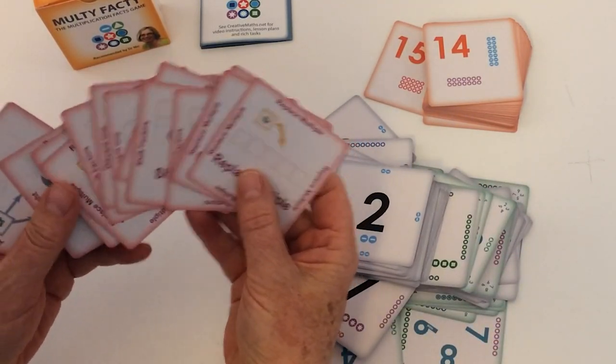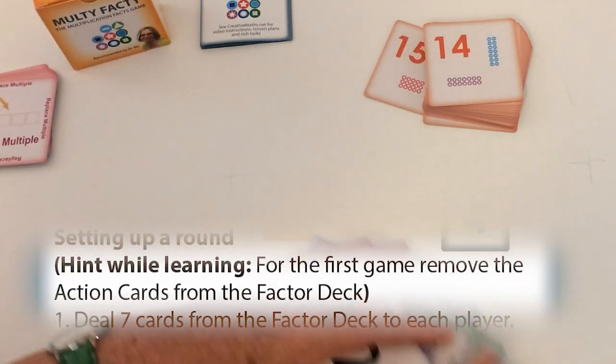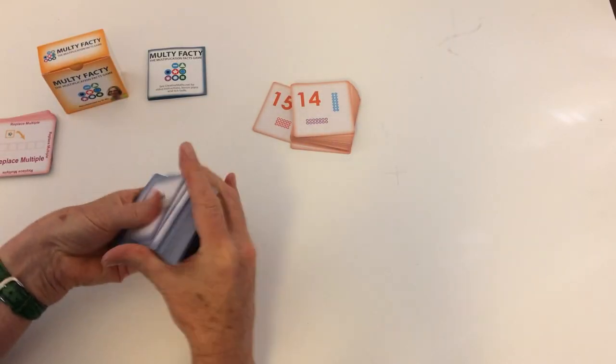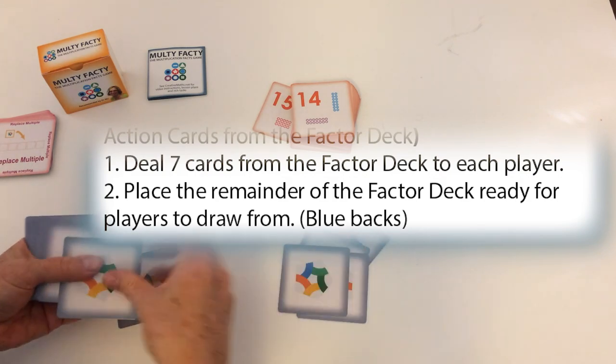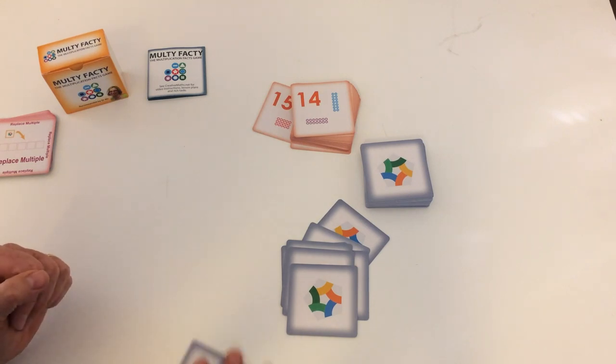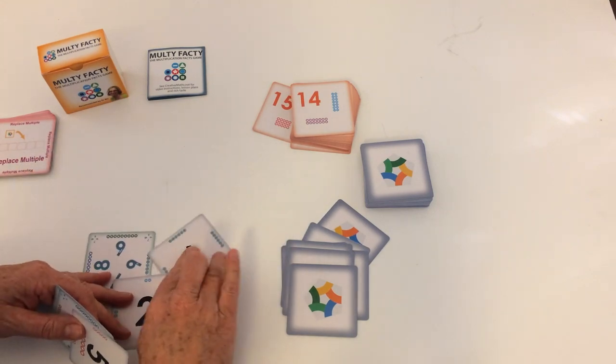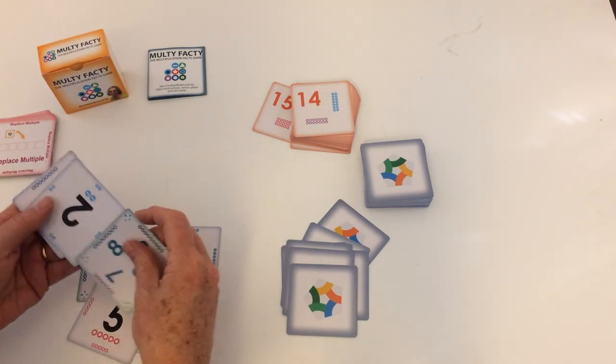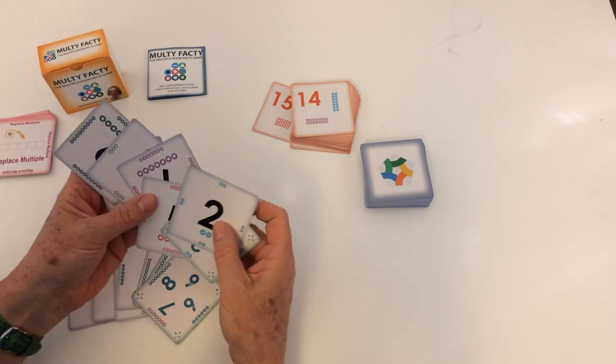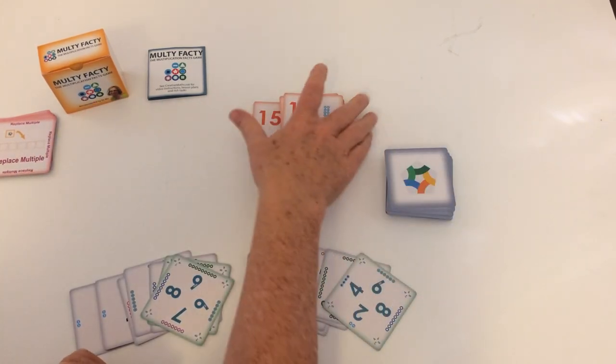And these are the action cards. But I'm going to show you how to play the game without the action cards to start with because that's the best way to begin. So you deal out seven of these each. Now the first time you play you're best to play with the cards showing because then it's easier to see what's going on and it's good for teaching. So I'm just going to lay the cards out in order so I can see what's going on.